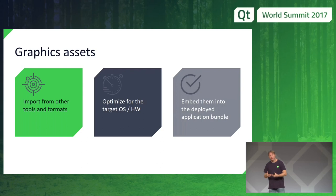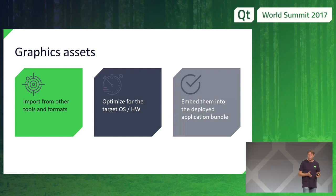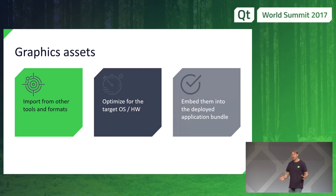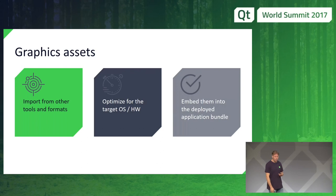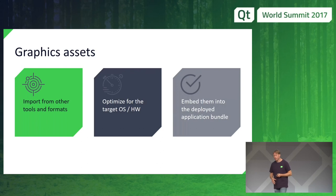The asset pipeline will, during build time, optimize assets for a specified target OS and hardware. For example, PNGs could be packed into a texture atlas and converted to a compressed format like ETC2, then embedded into the deployed application bundle — either as Q resources or bundled alongside the app. We already have ETC1 and ETC2 compressed texture support enabled in Qt Quick for 5.10, and we're working on putting this full pipeline together over the next couple of releases.